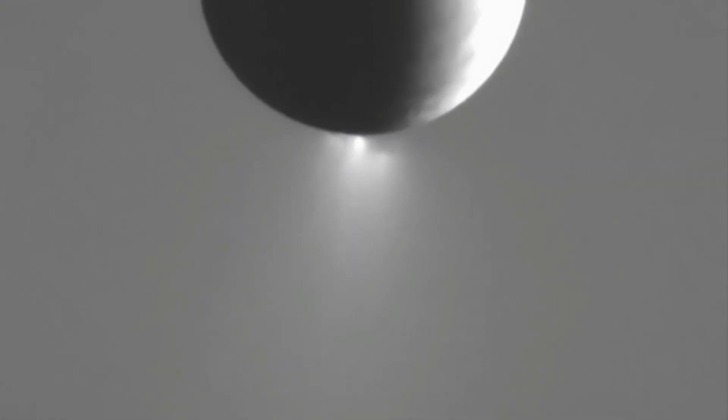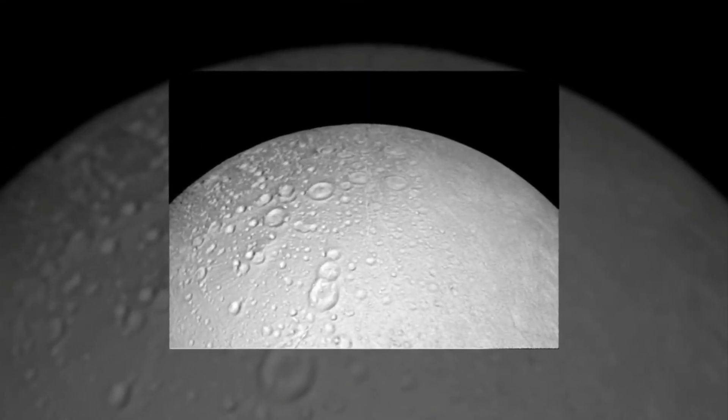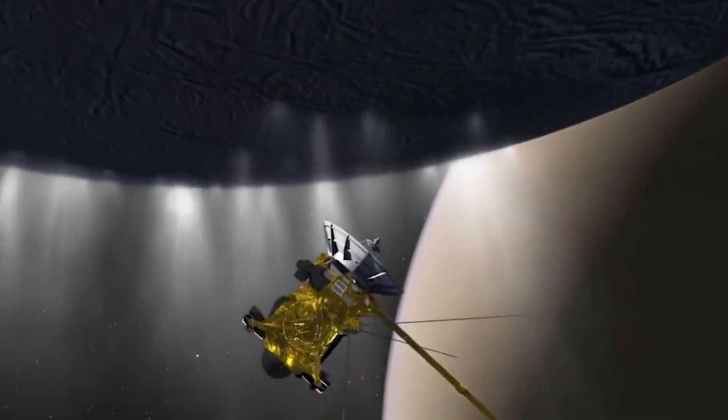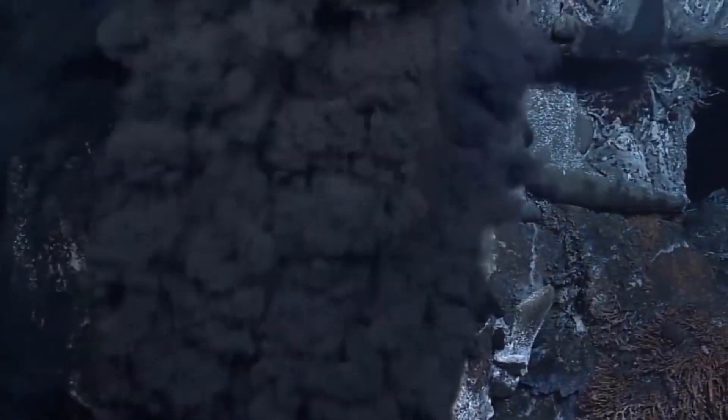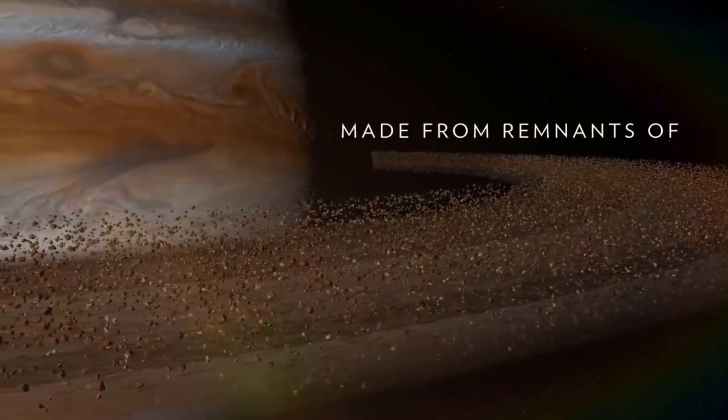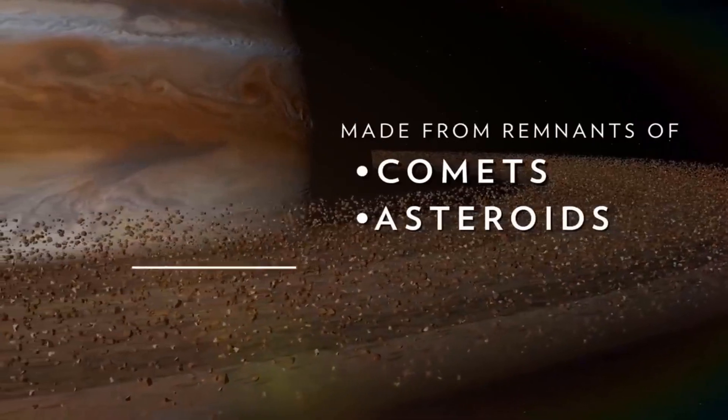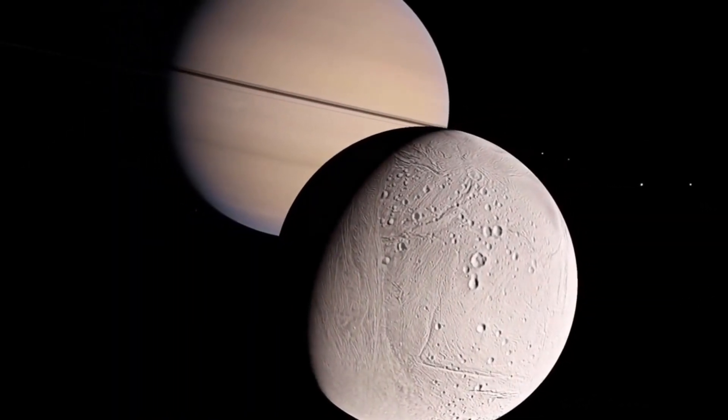It also appears that some moons were adopted by Saturn. The pockmarked Phoebe likely came from afar and was captured by Saturn's gravity at some point. Perhaps the most interesting of all of Saturn's moons is Enceladus. Few celestial objects in our solar system are as compelling as this icy moon. A handful of worlds are thought to have liquid water oceans beneath their frozen shell, but Enceladus sprays its ocean out into space where a spacecraft can sample it.